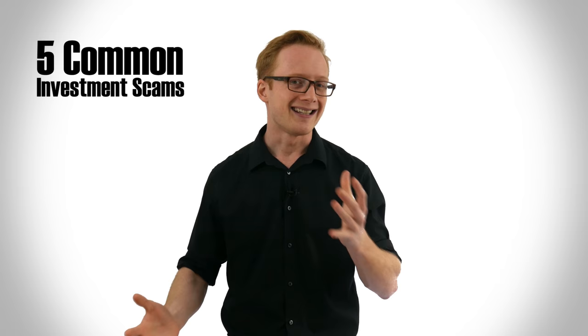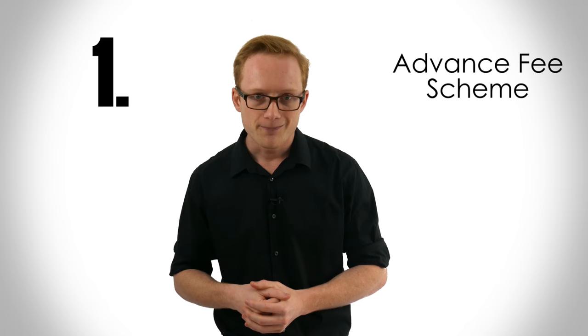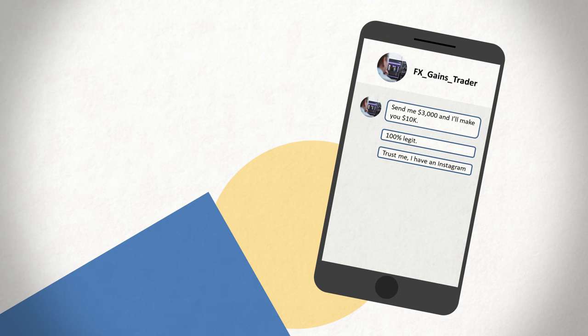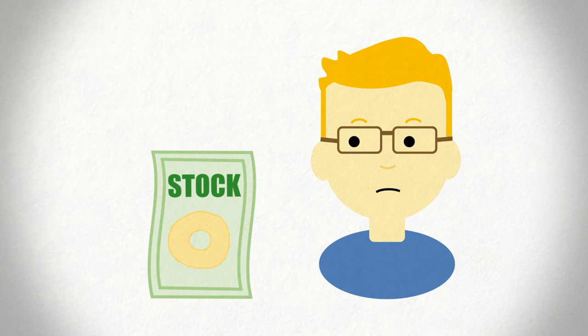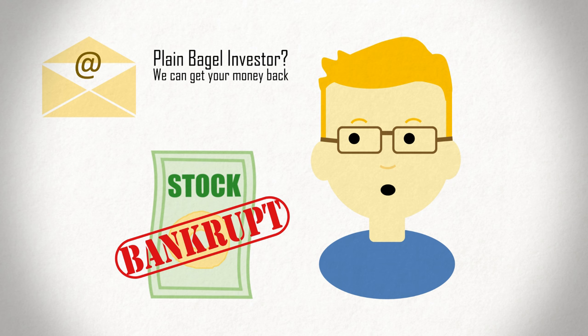We'll start off with the easiest to identify of the bunch, the advanced fee scheme. This involves a scammer trying to convince a victim to send them money. The scammer may, for example, pretend to be a trader who can use the victim's money to trade and earn them a profit. In other circumstances, however, these scams can be a bit more targeted and go after people who have recently lost money on a specific investment and promise some sort of refund or recouping of this loss. So long as the person first pays a processing fee or tax.